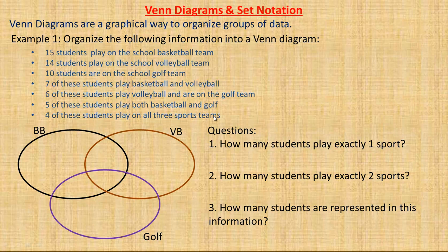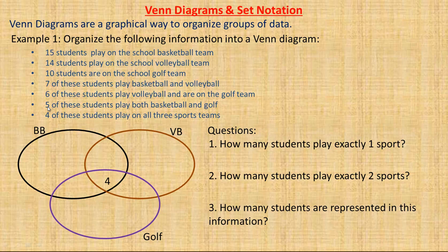When you're drawing a Venn diagram, it's very important to start from the middle and work your way out. So we start with the people that play on all of the teams — there are four students that play on all three sports teams, so I'll put a four in the center where all of the ovals overlap. Working up to the next one: five students play on both the basketball and the golf team.